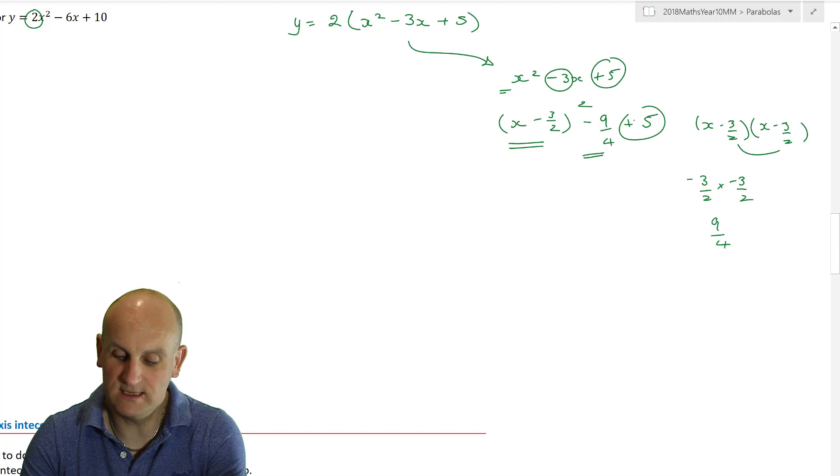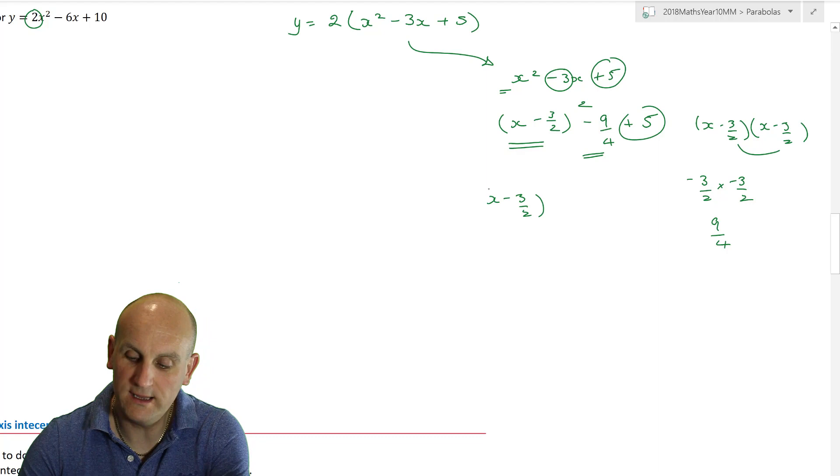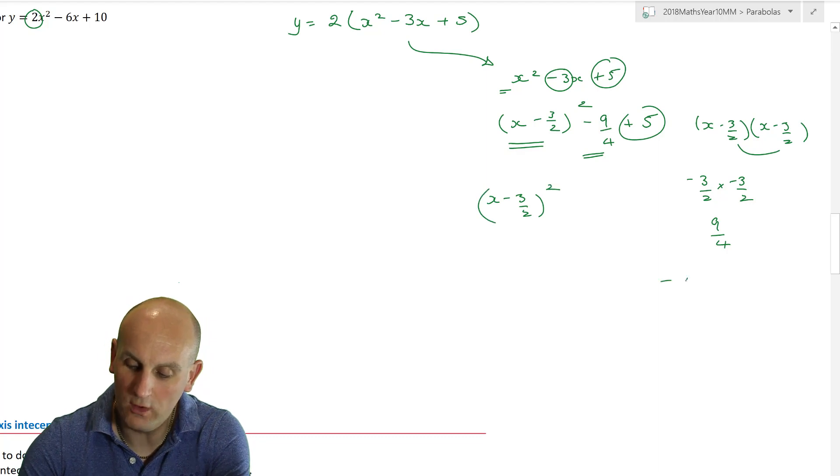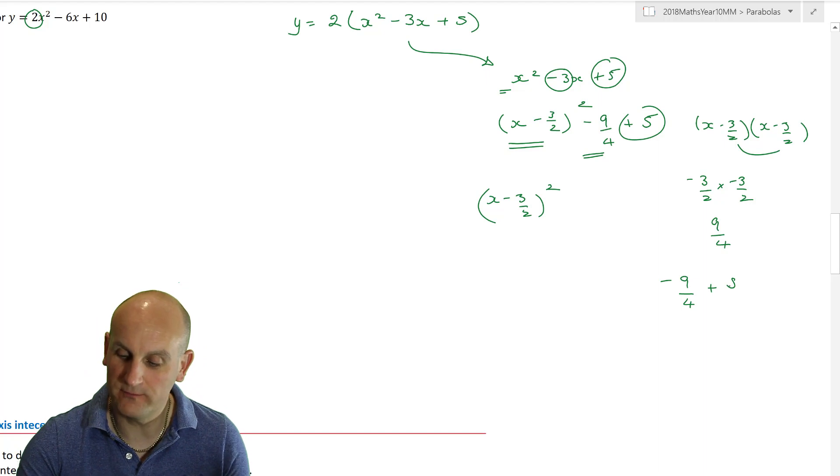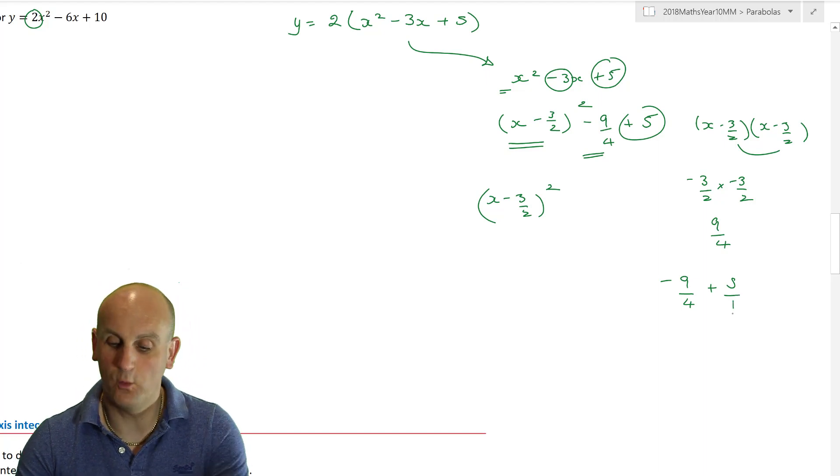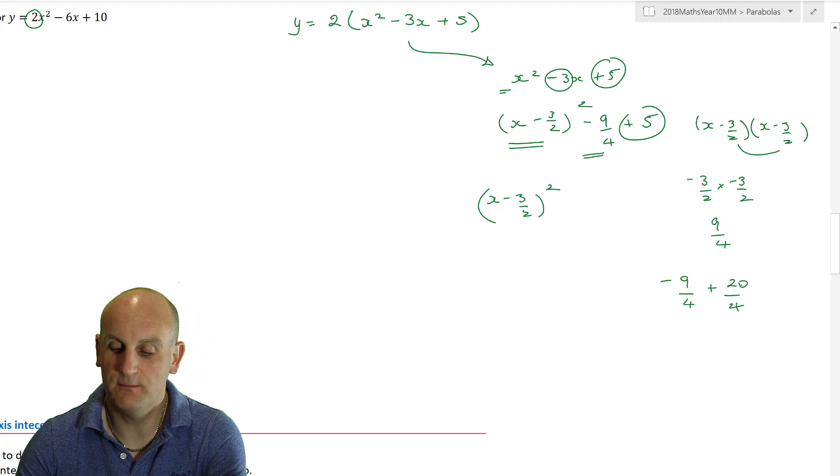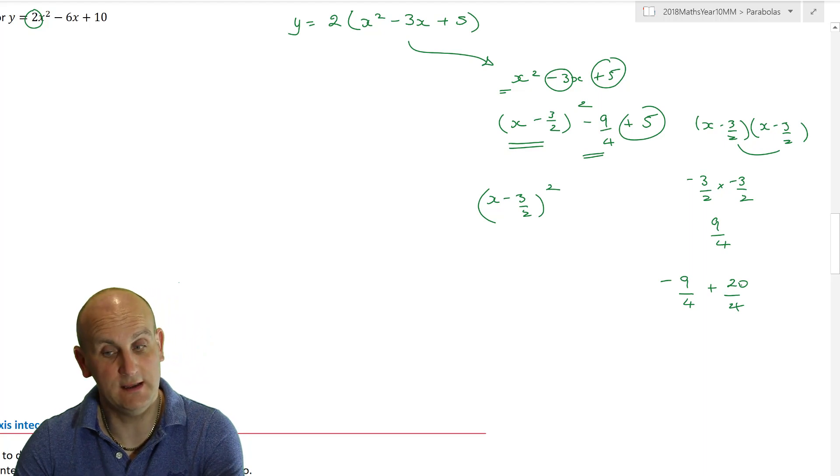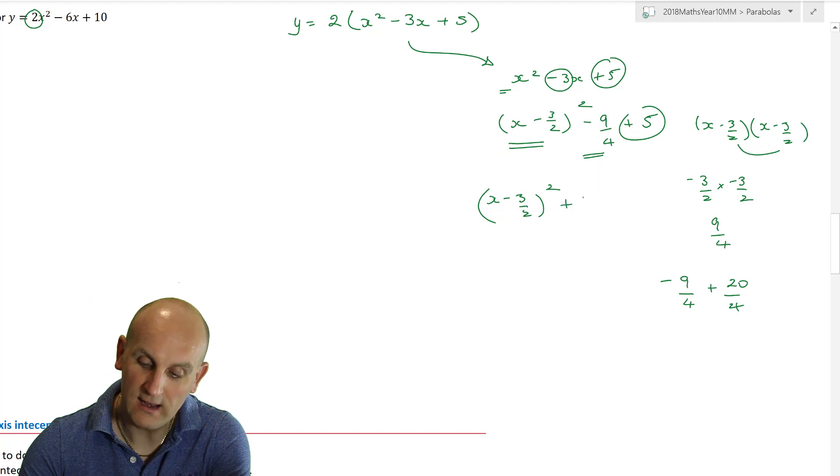So when I multiply this part of my bracket out, I get 9 on 4. Well, I don't want it. I want to get rid of that minus 9 on 4. Thank you very much. And then I want to get my plus 5 on the end. Well, I don't want to write it like that. So I have to now say, x minus 3 on 2 all squared. What is minus 9 on 4 plus 5? Well, I can only add fractions when the bottoms are the same. 5 over 1 becomes, well, if I multiply that by 4, I have to multiply the top by 4, which gives me 20 on 4. And minus 9 plus 20 absolutely is 11. So I'm going to do plus 11 on 4.